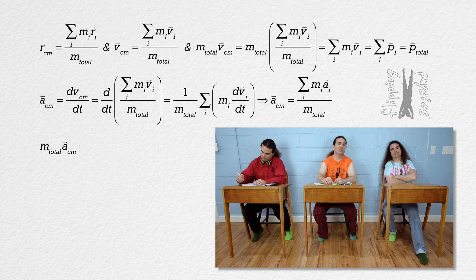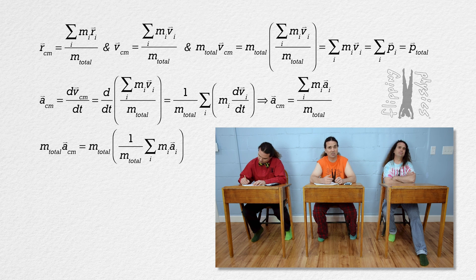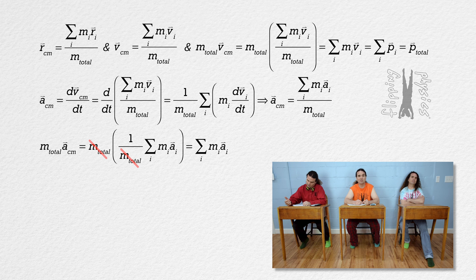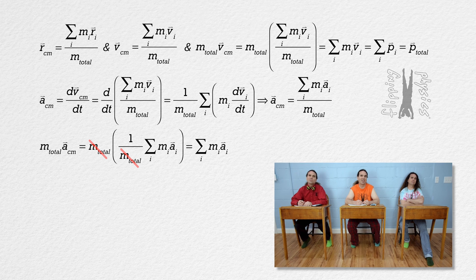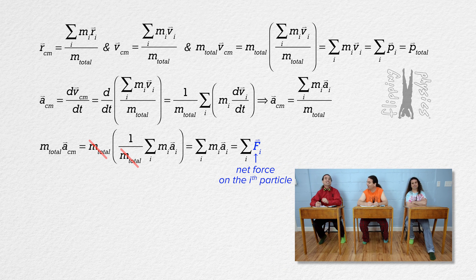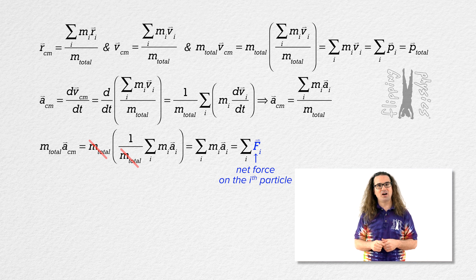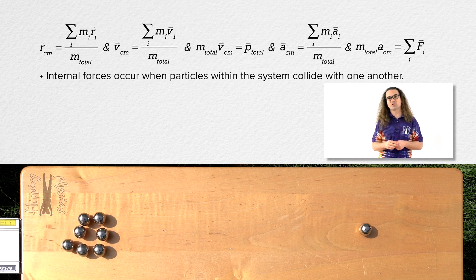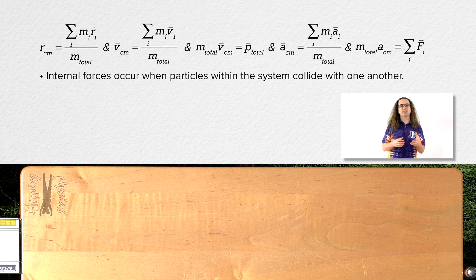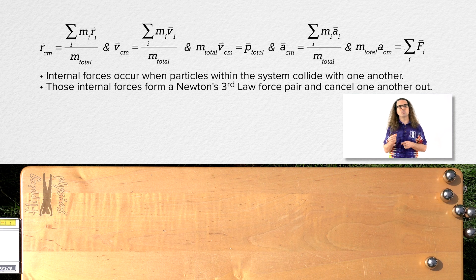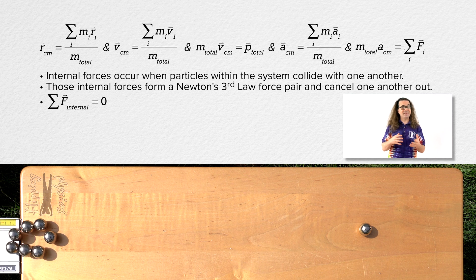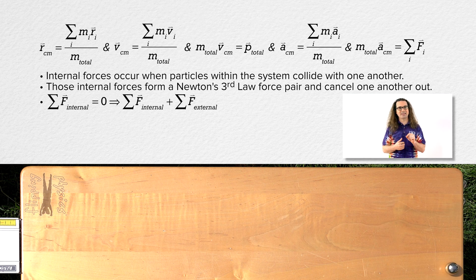And we can multiply the equation for the acceleration of the center of mass of the system of particles by the total mass of the system. The total mass of the system cancels out again, and we are left with the sum of the mass of the i-th particle times the acceleration of the i-th particle. And what does mass times acceleration equal? Net force — that is Newton's second law applied to a system of particles instead of a single particle. Now, the forces acting on any particle in the system will include both internal and external forces. Internal forces will occur when particles within the system collide with one another; however, those forces form a Newton's third law force pair and will therefore cancel one another out. That means the sum of the internal forces will always be zero, and summing the internal and external forces will equal only the external forces acting on the system.